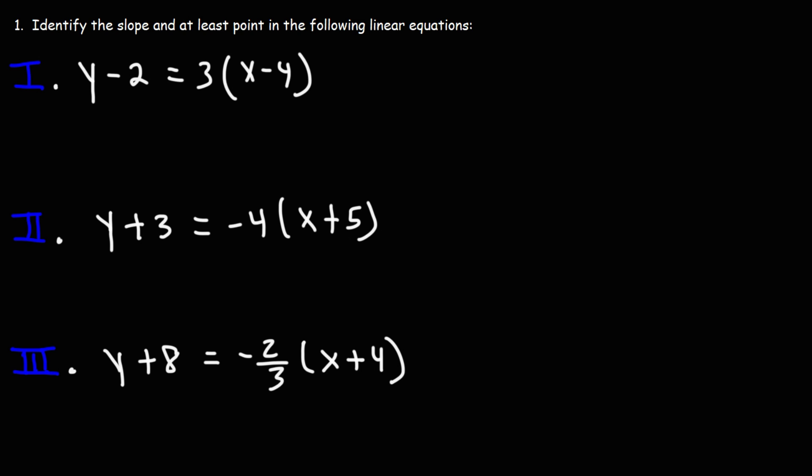Now let's work on this example problem: identify the slope and at least one point in the following linear equations. So in the first one, we have the equation in point-slope form: y minus 2 is equal to 3 times x minus 4. What is the slope, and what is the point?